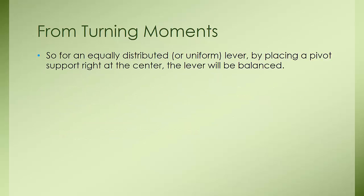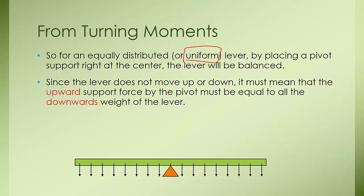So for an equally distributed, or uniform — the key word is uniform — lever, by placing a pivot support right at the center, the lever will be balanced. Since the lever doesn't move up or down, it must mean that the upward support force provided by the pivot must be equal to all the downward forces. If you add up all the forces, the lever is supported by an equal upward force, as indicated by this arrow.